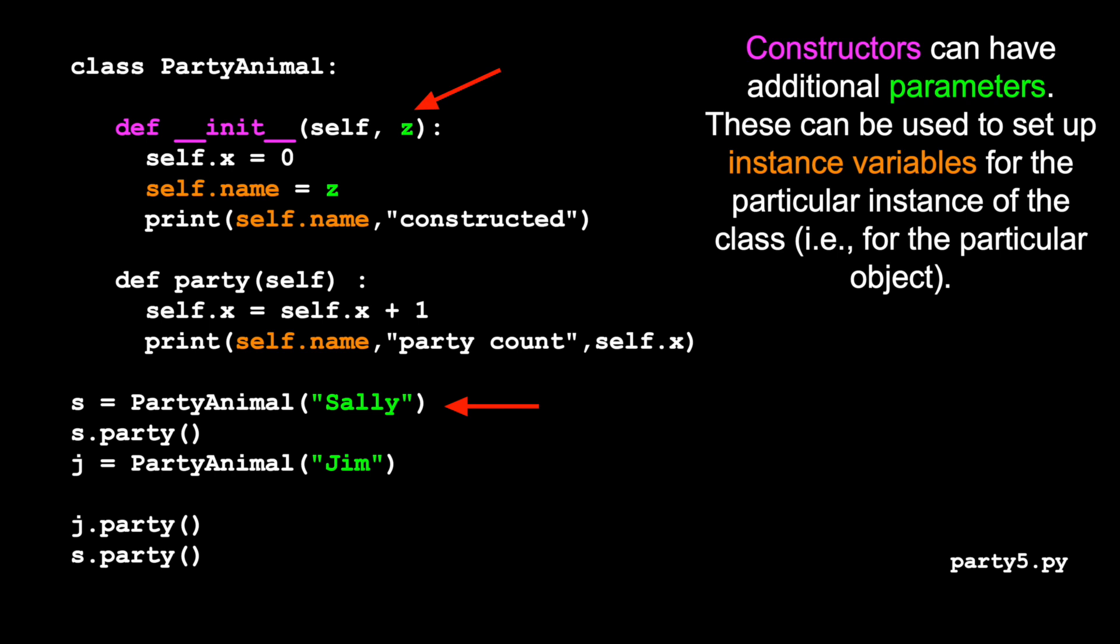And so self is the object itself. And z, this first parameter, is whatever parameter we put here. Everything we've done so far has no parameter here. But now we have a parameter here. And then that means that when we call this constructor, name is going to be Sally in this particular thing. And then it'll say, oh, self.name, which will be Sally, which has been constructed.